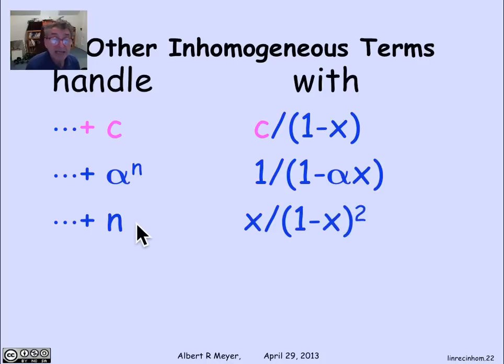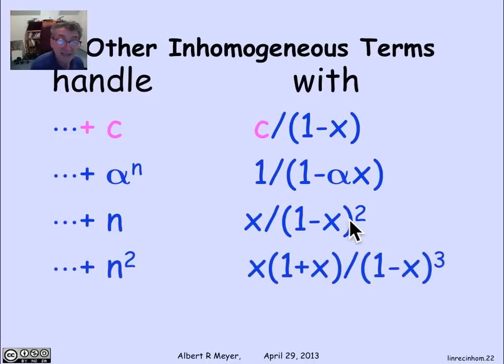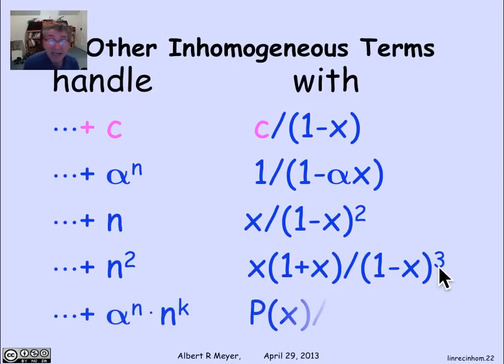In fact, I can handle one where the inhomogeneous term is the identity function n because we have the generating function for n. We figured that out already. It was x over 1 minus x squared. And likewise, there's a generating function for the squares, which is x times 1 plus x over 1 minus x cubed. It's an easy exercise to derive that using the perturbation method or taking derivatives. Lots of ways to do it.